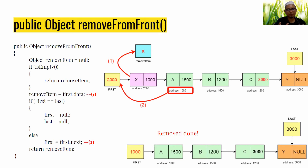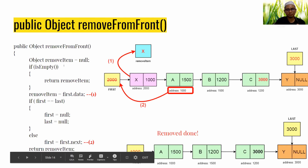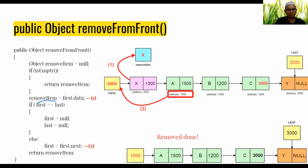The first step is to get the first node's data. Since we want to remove from the front, we get the data of the first node and store it into the removeItem object. This is step one: get X and store it into removeItem.